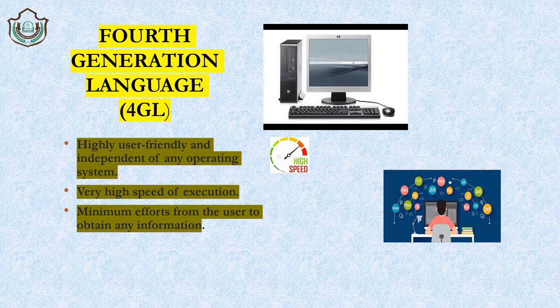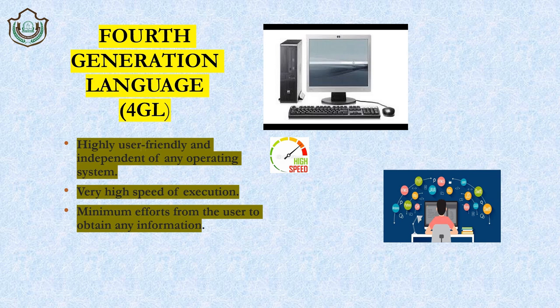Let's do a quick revision. First generation language is machine language — the computer understands only this, using binary numbers 0 and 1. Second generation is assembly language, which uses mnemonic codes or symbols instead of 0 and 1, and uses the assembler translator to convert into machine language. Third generation is high level language, using languages like C, C++, Java, and Pascal, converted into machine language by two translators: interpreter and compiler.